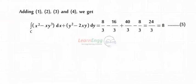The closed integral of (x squared minus xy cubed) dx plus (y squared minus 2xy) dy equals 8.